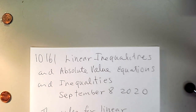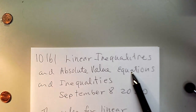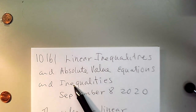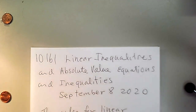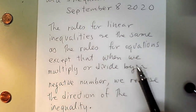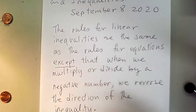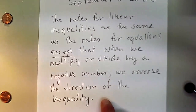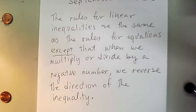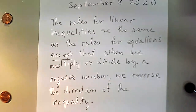We're going to start with linear inequalities. These are three topics we'll cover: linear inequalities, absolute value equations, and absolute value inequalities. The rules for linear inequalities are the same as the rules for equations, with one big exception: when we multiply or divide by a negative number, we have to reverse the direction of the inequality.